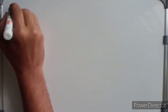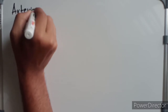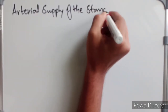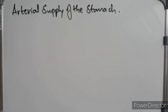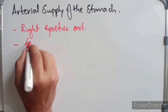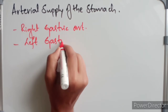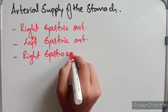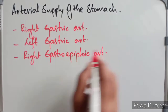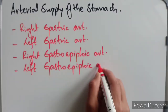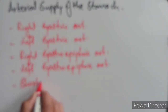We are going to discuss the arterial supply of the stomach. There are five main arteries supplying it: the right gastric artery, left gastric artery, right gastroepiploic artery, left gastroepiploic artery, and the short gastric arteries.